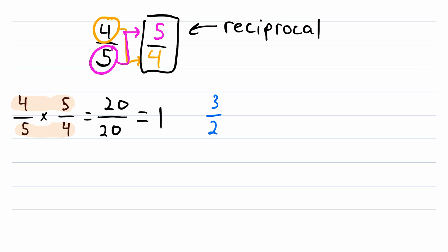For another example, what if we had 3 over 2, what's the reciprocal of this fraction? Well just swap the numerator and denominator, so it's going to be 2 over 3. Again, if we multiply these fractions, we get 6 over 6, which is just equal to 1.